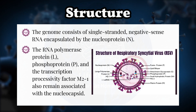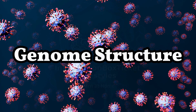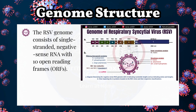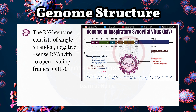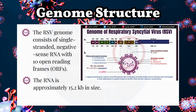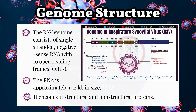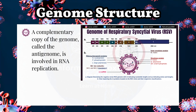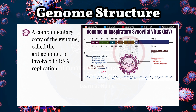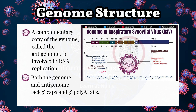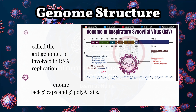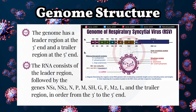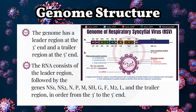Genome Structure of Respiratory Syncytial Virus (RSV). The RSV genome consists of single-stranded negative-sense RNA with 10 open reading frames (ORFs). The RNA is approximately 15.2 kilobases in size and encodes 11 structural and non-structural proteins. A complementary copy of the genome, called the antigenome, is involved in RNA replication. Both the genome and antigenome lack 5' caps and 3' poly-A tails.